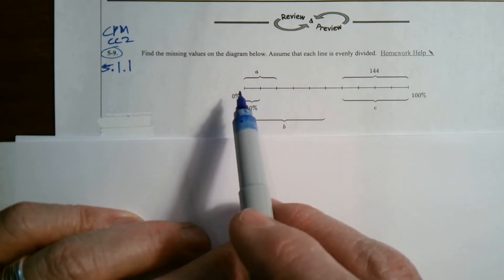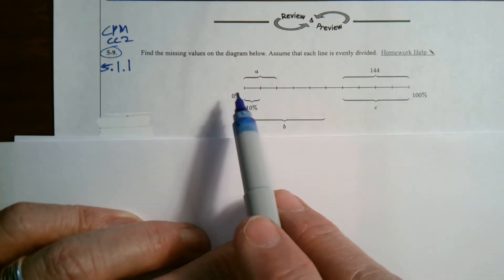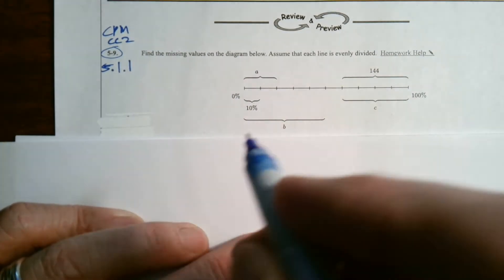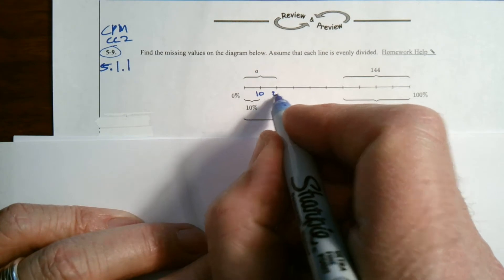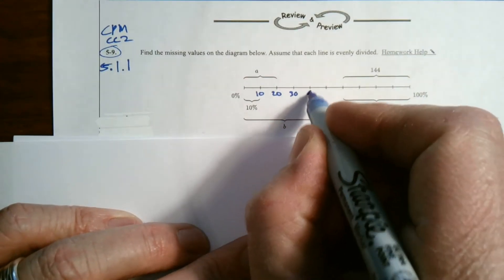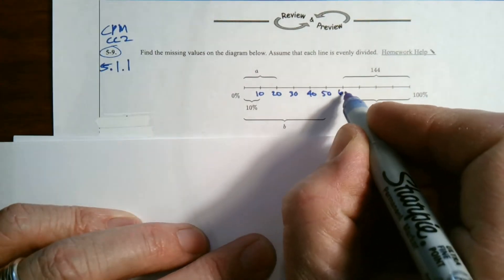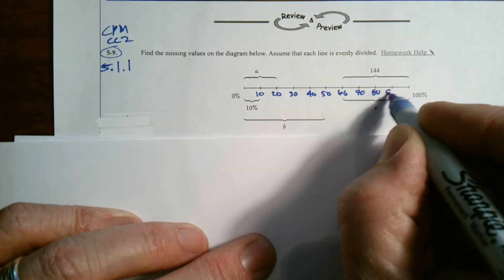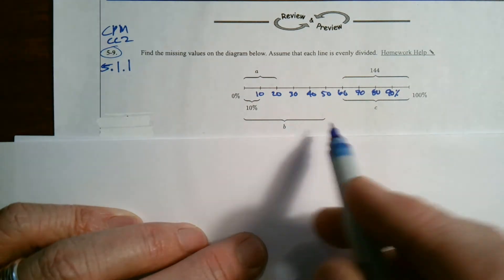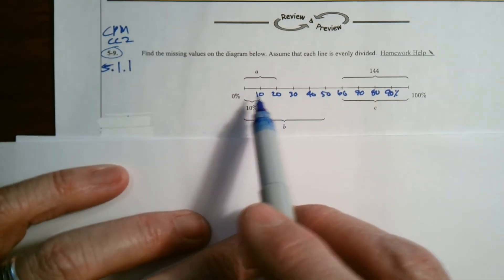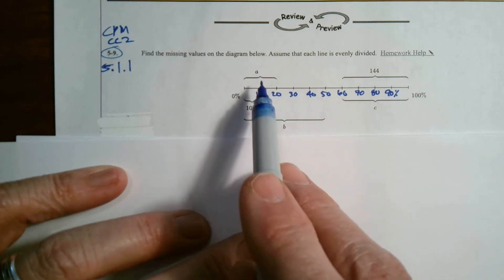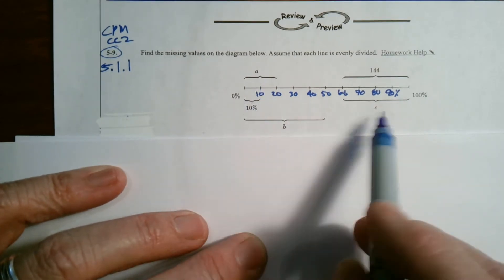So this is our percent number line from 0 to 100, and they tell me that right there is 10 percent. So we know that's 10, 20, 30, 40, 50, 60, 70, 80, and 90 percent. This is all the percents. So I need to find out what are my other quantities based on this information. I want to know what is A, what is B, and what is C.